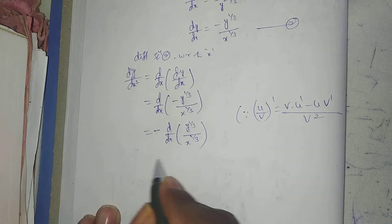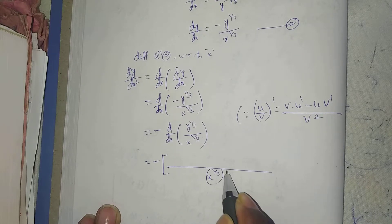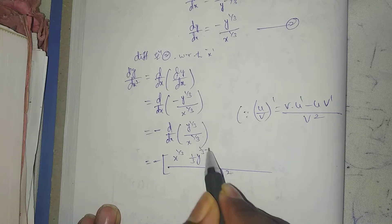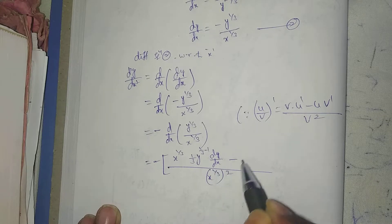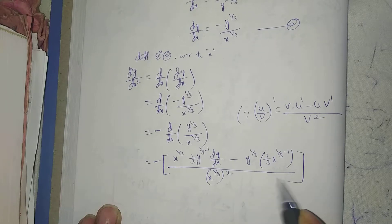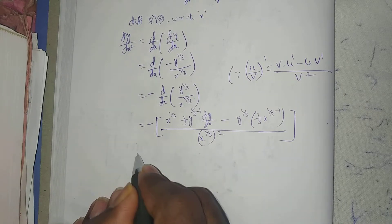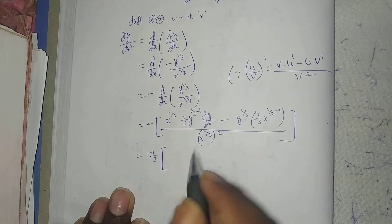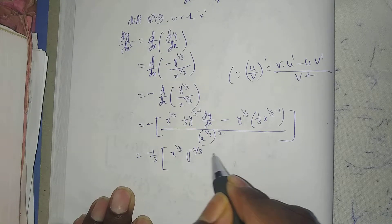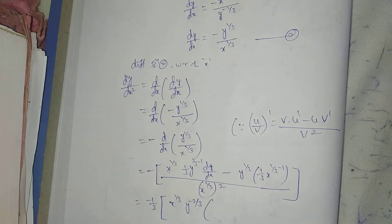Applying the quotient rule: d²y/dx² = -[x^(1/3) · (1/3)·y^(1/3 - 1)·dy/dx - y^(1/3) · (1/3)·x^(1/3 - 1)] / (x^(1/3))². Substituting dy/dx from equation 2 as -y^(1/3)/x^(1/3): this gives -[1/3·y^(-2/3)·(-y^(1/3)/x^(1/3))·x^(1/3) - y^(1/3)·(1/3)·x^(-2/3)] / x^(2/3).